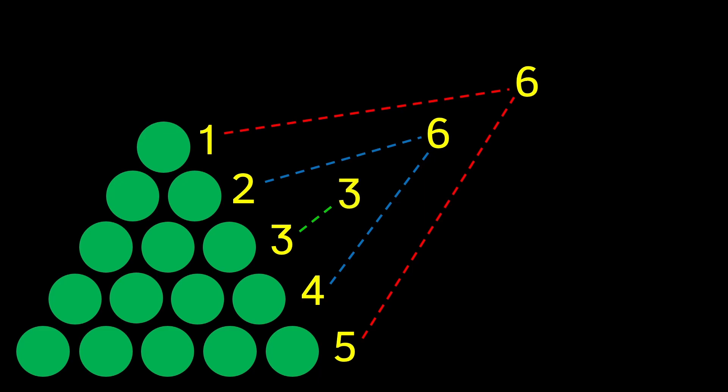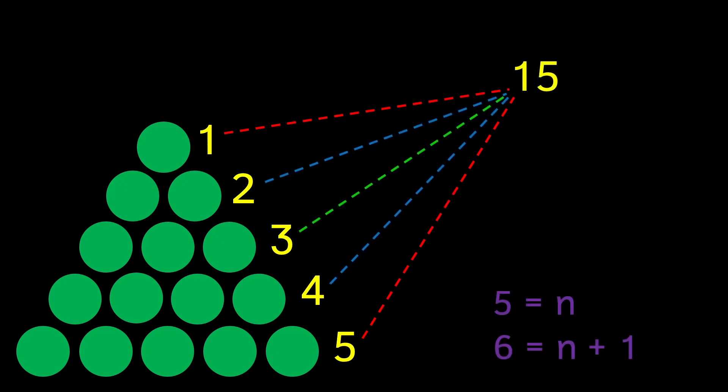Because our triangle is five rows high, we know that n equals five, so we can rewrite six as n plus one. Additionally, if we combine all the sums we found earlier, we get the total number of dots in the triangle.